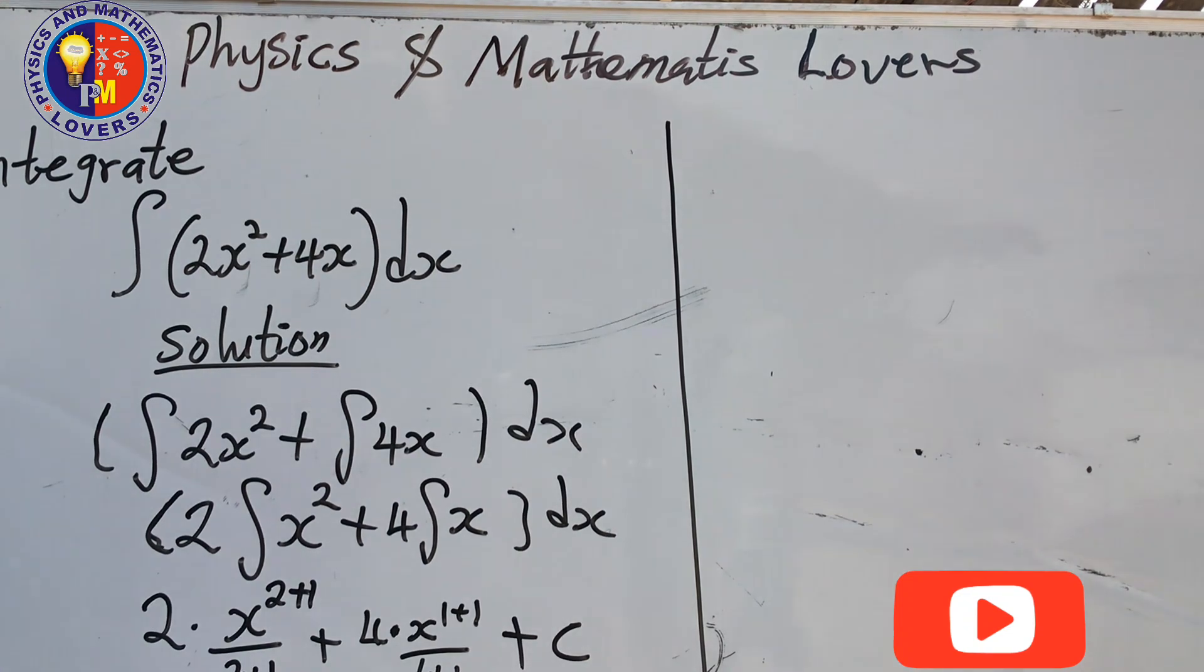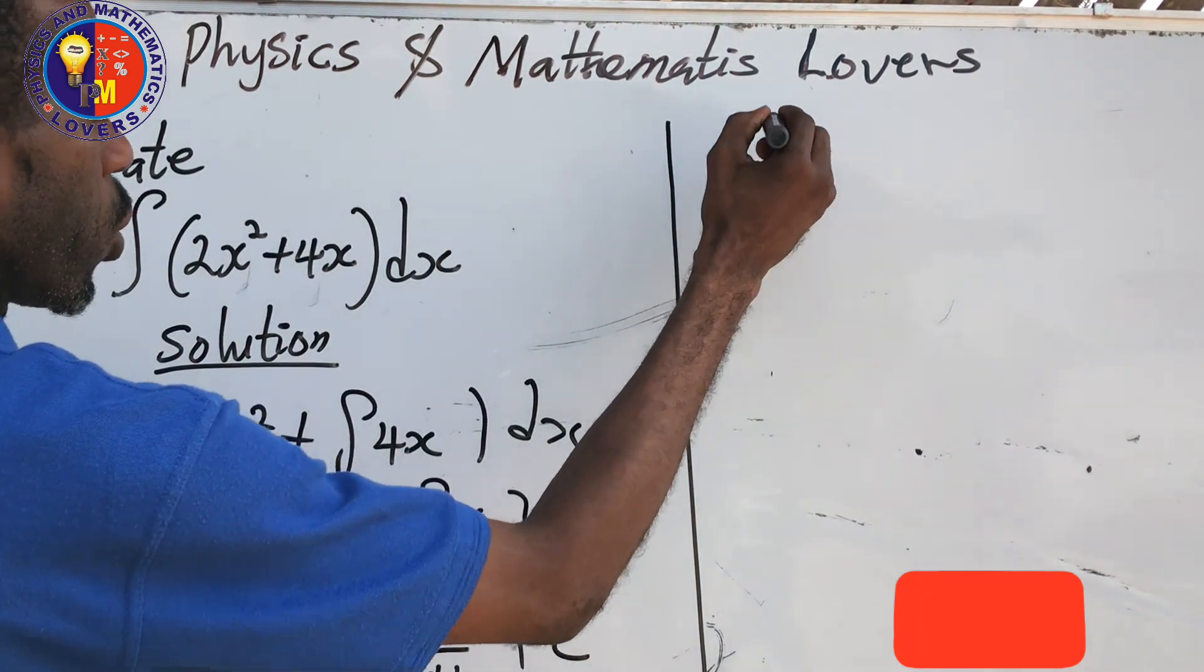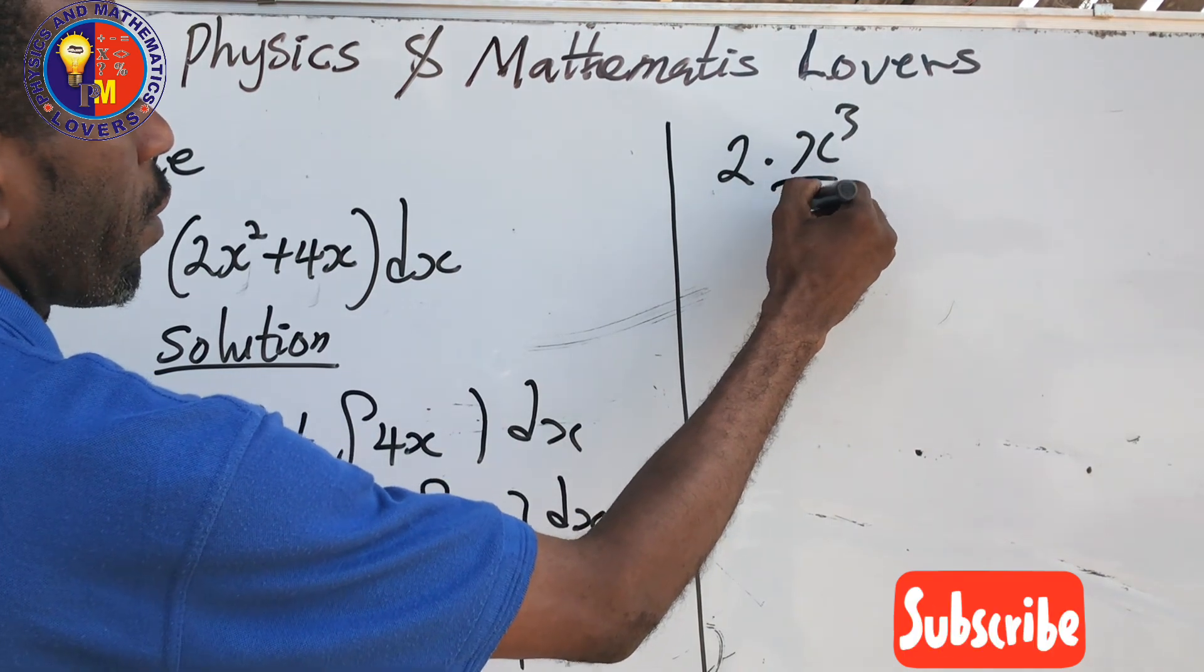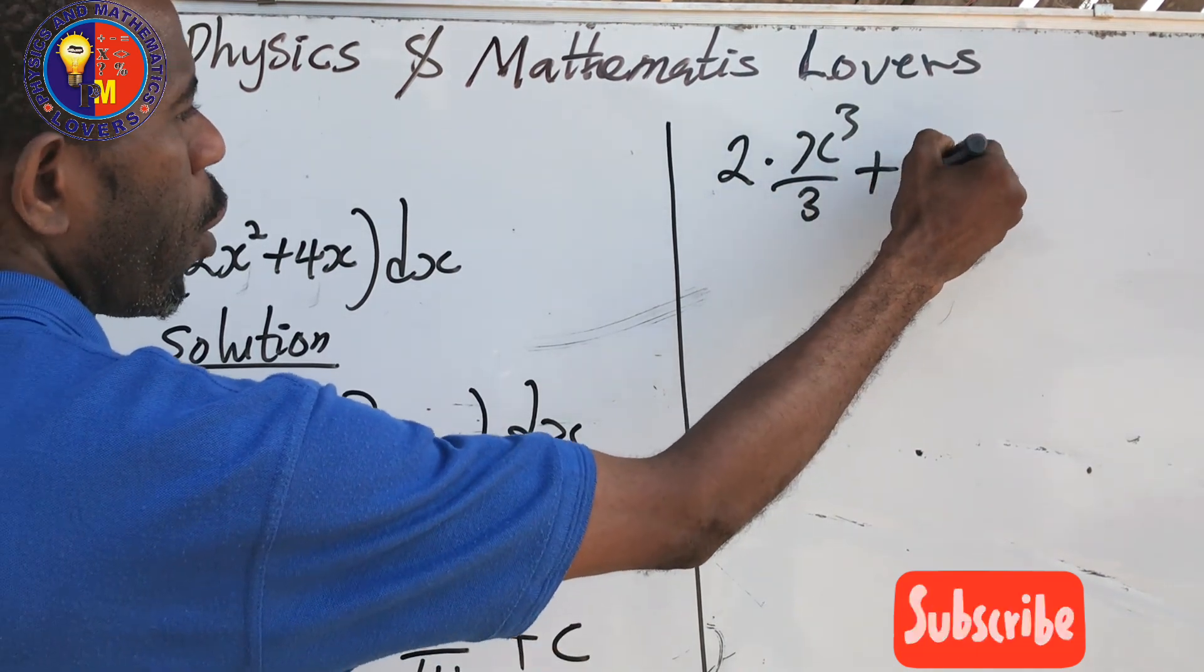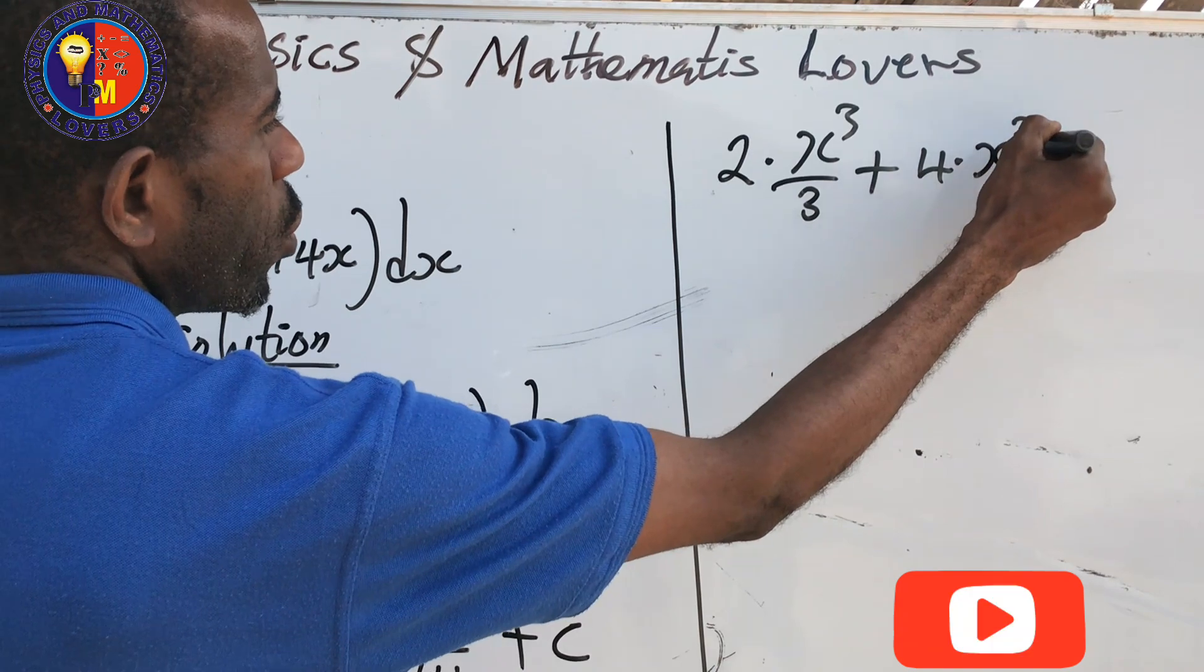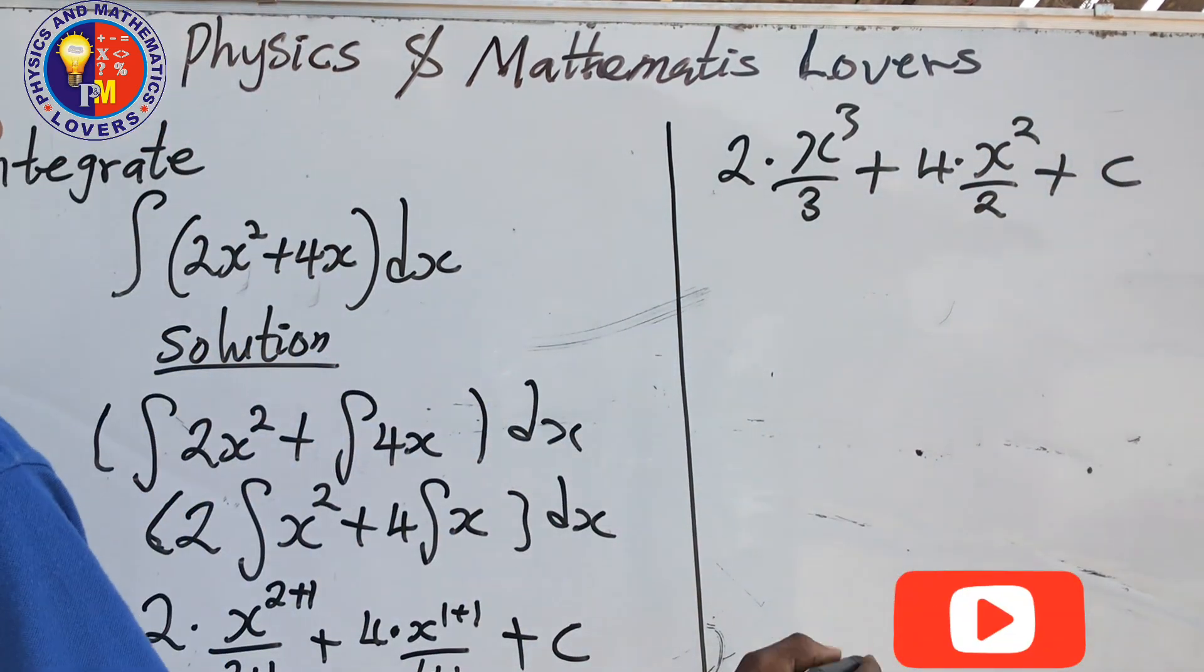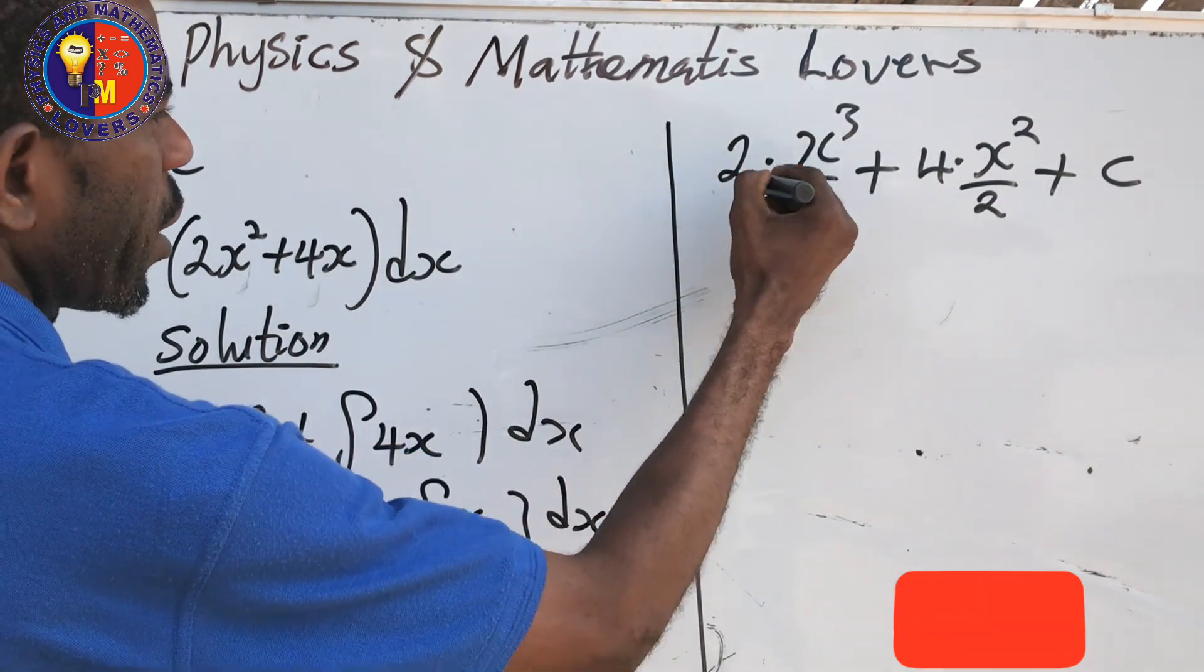Here I have 2 multiplying x raised to power 3 all over 3, plus 4 multiplying x raised to power 2 all over 2, plus our constant. Now combining all of them together.